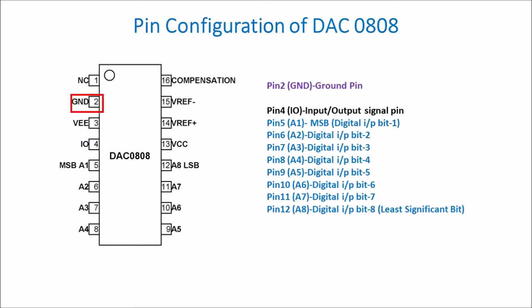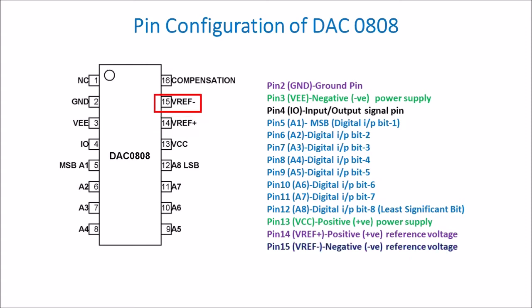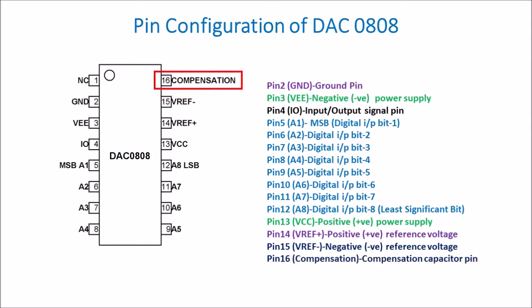The ground terminal is pin number 2. VCC is pin number 13; a 5-volt supply can be used as VCC. The VEE terminal takes a negative voltage at pin number 3; generally we connect this pin to ground. The V-reference positive terminal is generally connected to plus 5 volt supply, though 10 volt can also be used, and the output current depends upon this reference voltage. The negative reference at pin number 15 is generally connected to ground. A capacitor can be connected to the compensation terminal between pin number 16 and ground to reduce noise, and pin number 1 is not connected.